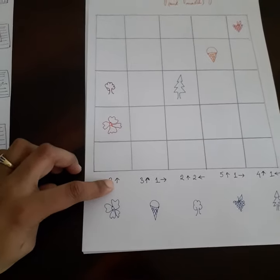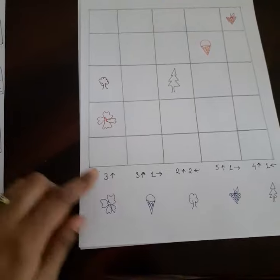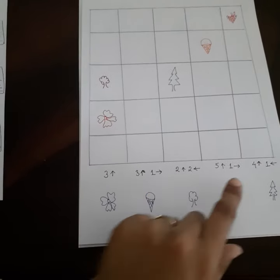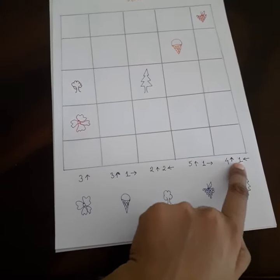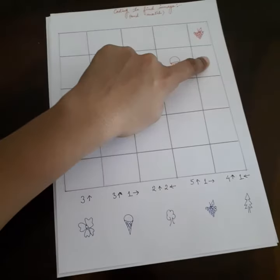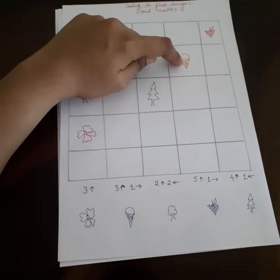So he has to match this code with the answer - he'll match with the tree over here. Suppose we take this one: four up and one left - one, two, three, four, and one left. He finds an ice cream, so he'll match this with the ice cream image.